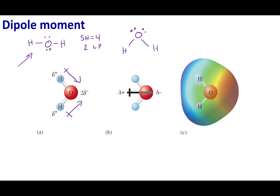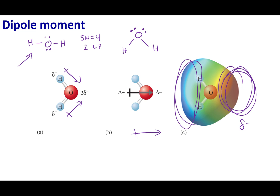The dipole arrows don't cancel out. One is pointed up and to the right, the other down and to the right. While the up and down components cancel each other, nothing is canceling out the rightward movement. So electrons are going to go to one side of the molecule, making it slightly negative, and the other side slightly positive. There is a net dipole towards the oxygen, which means the molecule is polar.